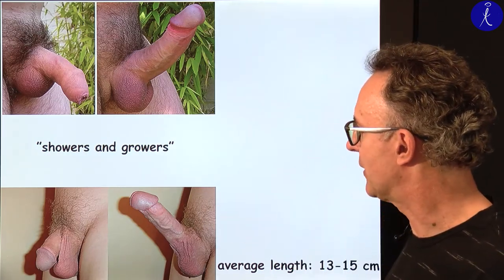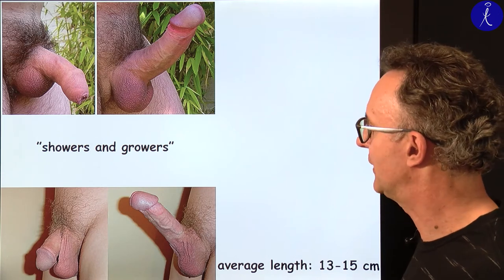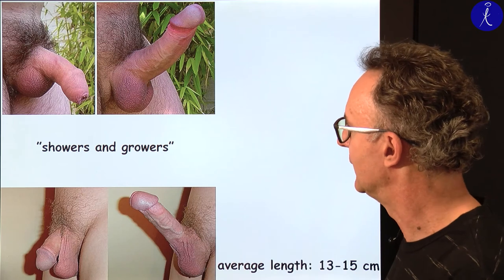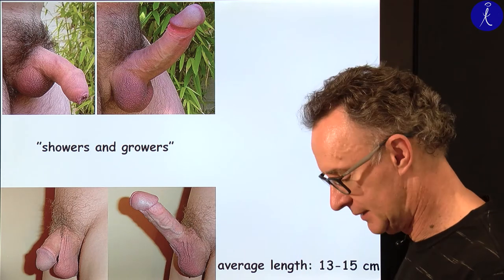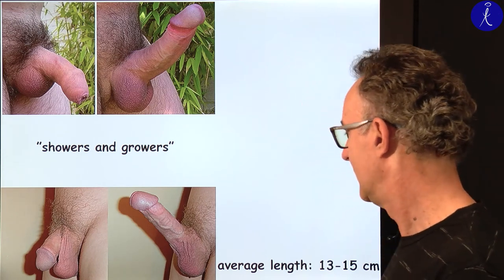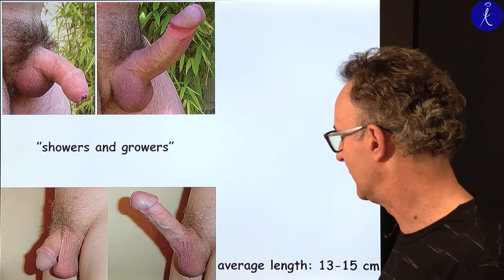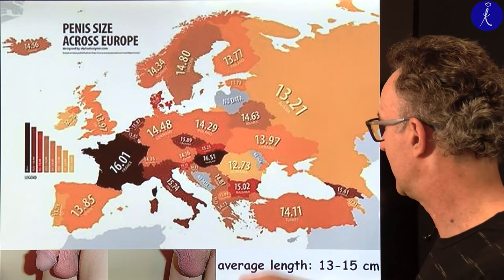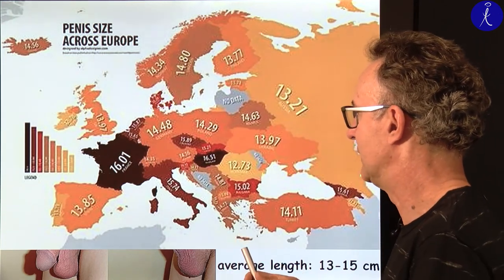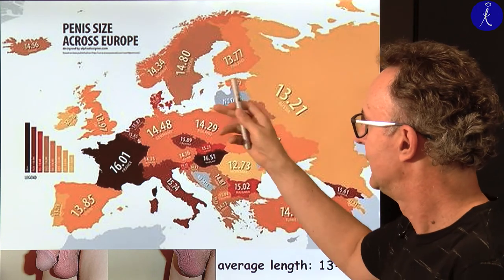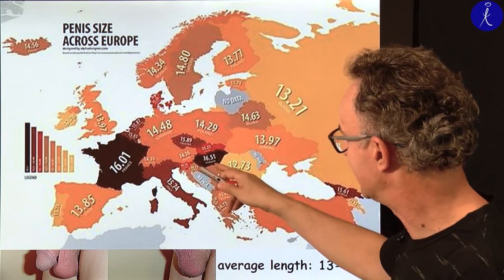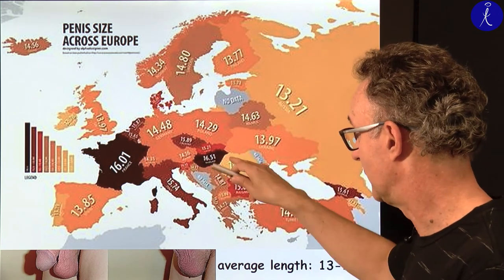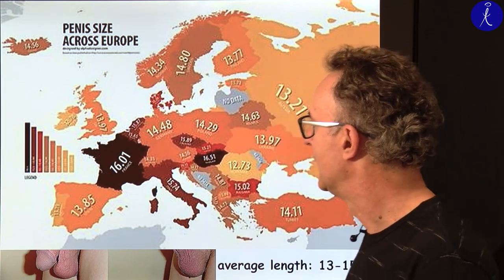There are two types: showers and growers. Showers have a larger flaccid penis that doesn't grow much; growers have a smaller flaccid penis that increases more. The average erected penis length is 13 to 15 centimeters. A referenced study shows Hungary ranks highest at approximately 16 to 16.5 centimeters, followed by France. Thank you for your attention.